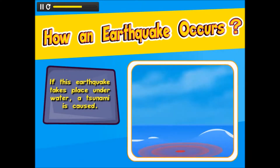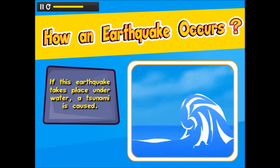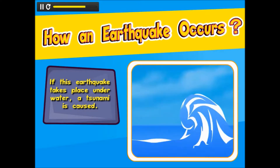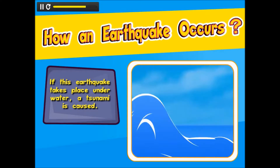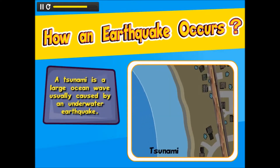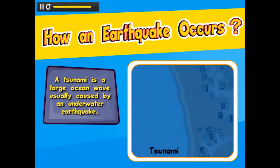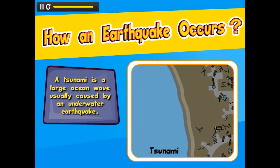Now imagine if this earthquake takes place underwater. In such a case, a tsunami is caused. A tsunami is a large ocean wave usually caused by an underwater earthquake. With a tsunami, water flows straight. This is why tsunamis cause so much damage.